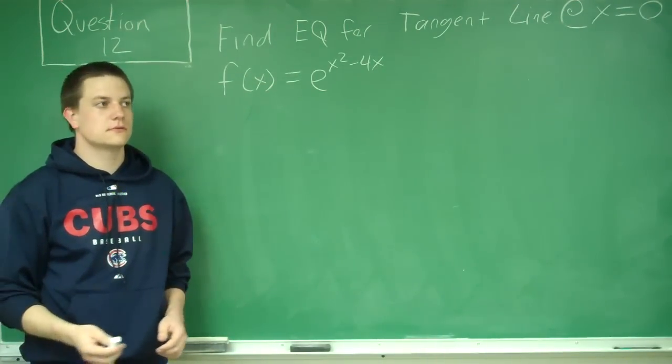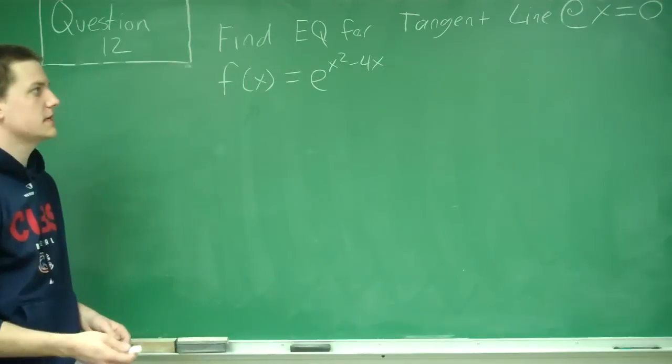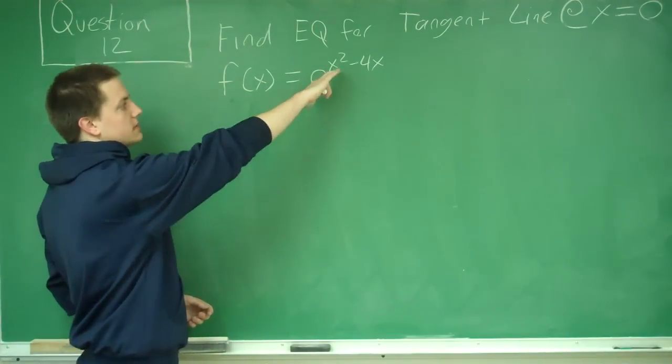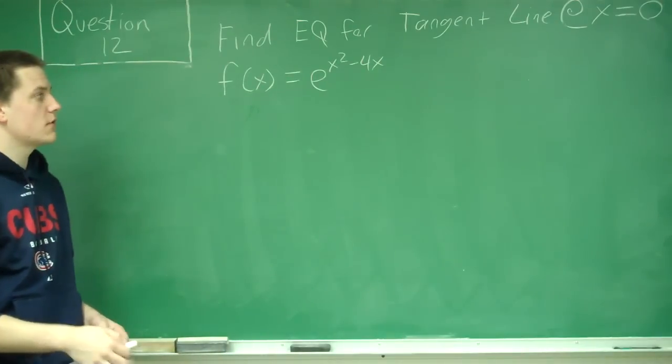Hi, this is question number 12. It asks us to find the equation for a tangent line at x equals 0 for the function e raised to the power of x squared minus 4x.